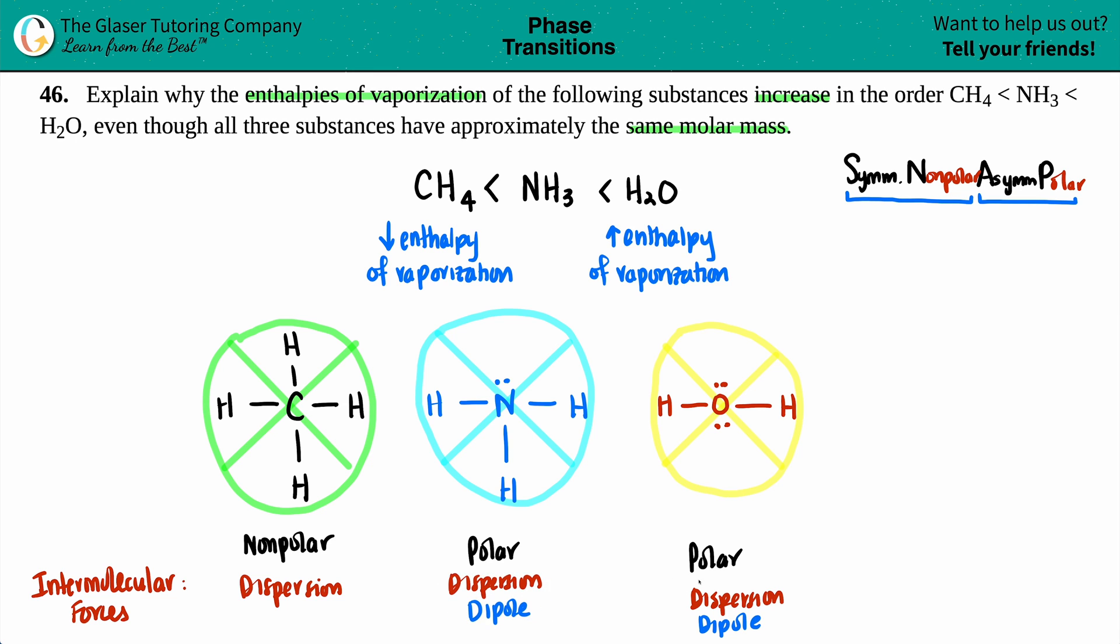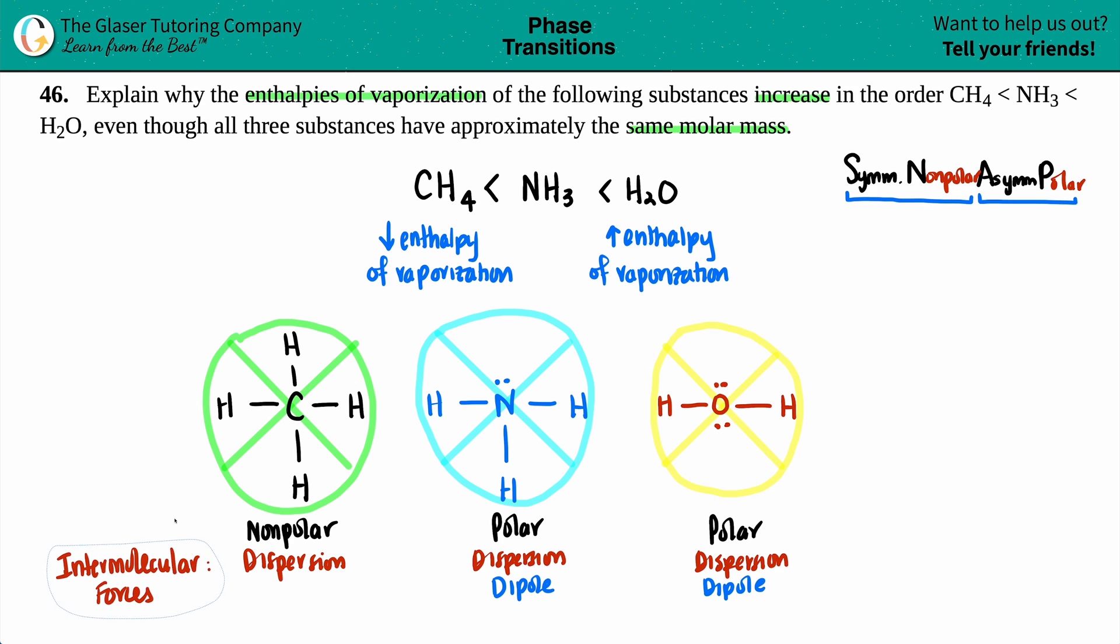So right off the bat, we can already discuss why CH4 has the lowest enthalpy of vaporization. The rule here is that the higher your intermolecular forces, so the more that you pick up, the higher your enthalpy of vaporization, no matter the molar mass. So that's why CH4 is the lowest because it only has dispersion.